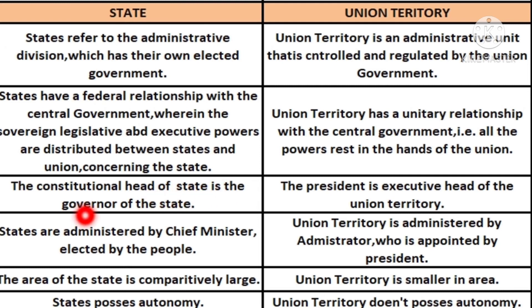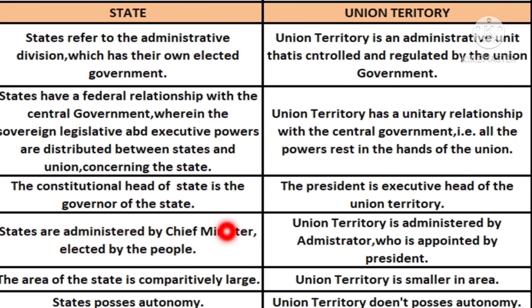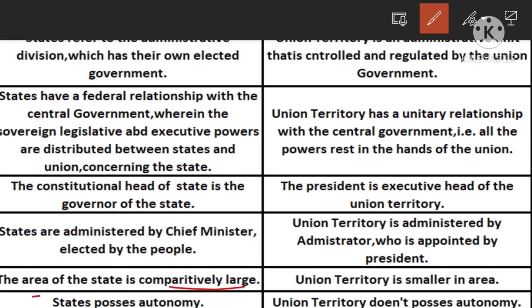The head of a state is the Governor, while in a union territory the President is the executive head. States are administered by a Chief Minister who is elected by the people. Union territories are administered by an Administrator who is appointed by the President.